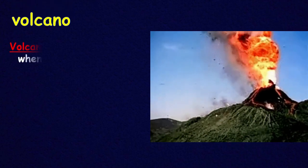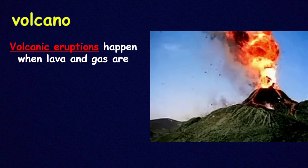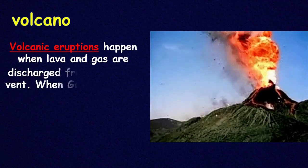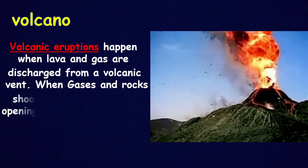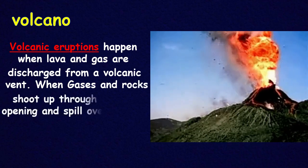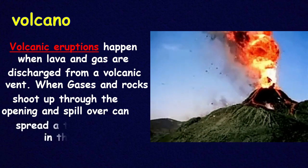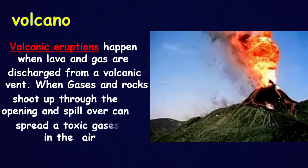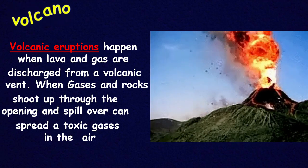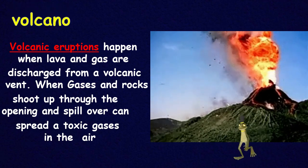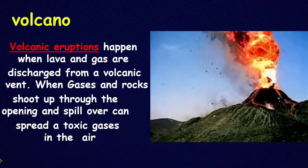Do you know what that is, kids? We call it a volcano eruption. It happens when lava and gas are discharged from a volcano. It's so scary when gases and rocks shoot up through the opening and spill over, spreading toxic gases in the air with flying rocks and ashes everywhere.